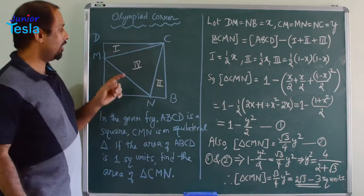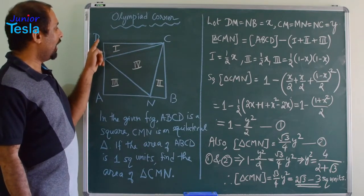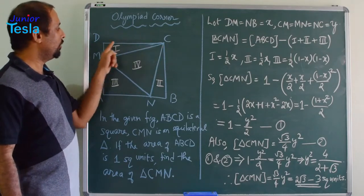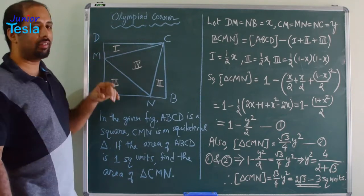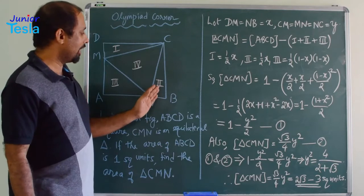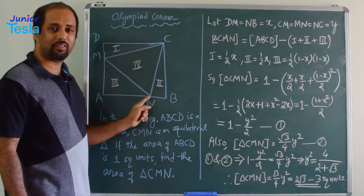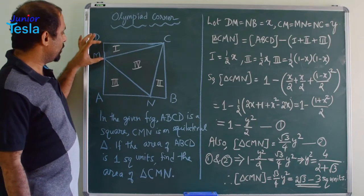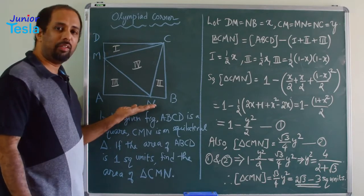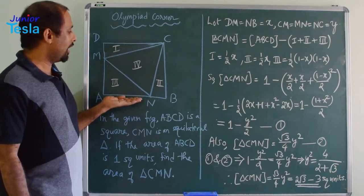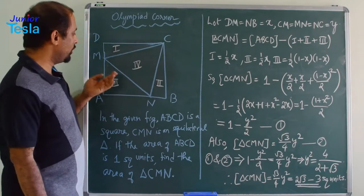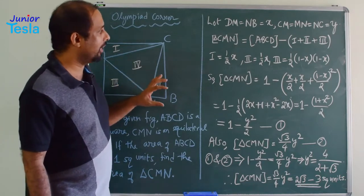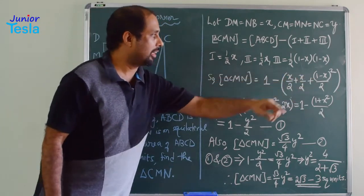All three parts are triangles. The first triangle's area is half × base × height = half × 1 × X = X/2. Similarly, the second triangle is also X/2. For the third triangle, the base is 1 minus X and the height is 1 minus X, so its area is (1 − X)² / 2.